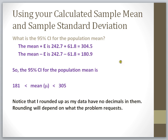Once I've calculated my margin of error, I can answer: what is the 95% confidence interval for the population mean? To get the final confidence interval, I both add and subtract the margin of error from the sample mean. Sample mean plus margin of error is 304.5, and sample mean minus margin of error is 180.9. So my 95% confidence interval around the population mean mu is between these two values.